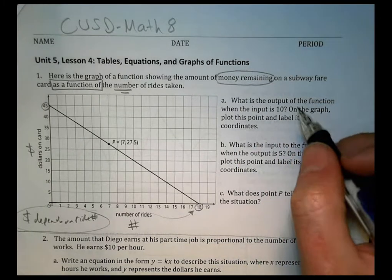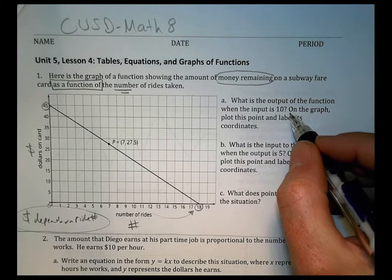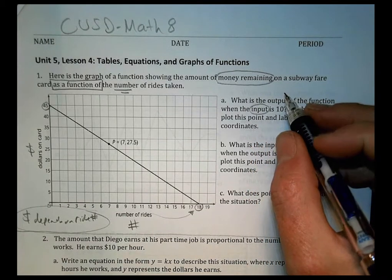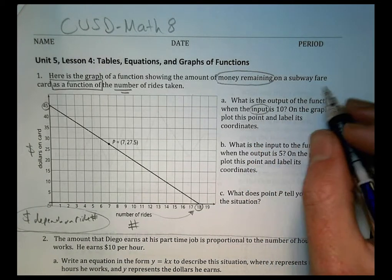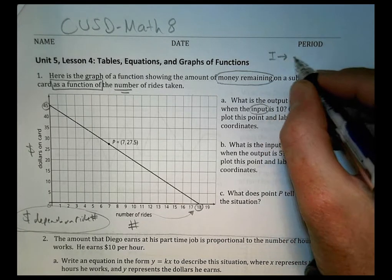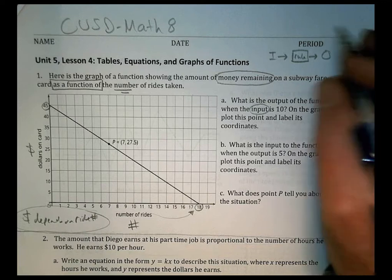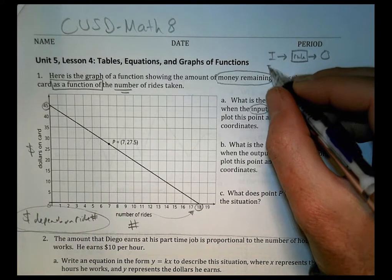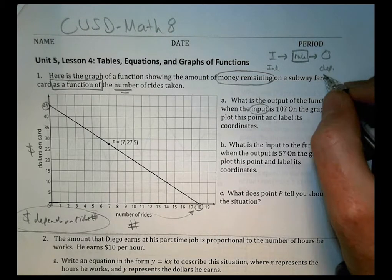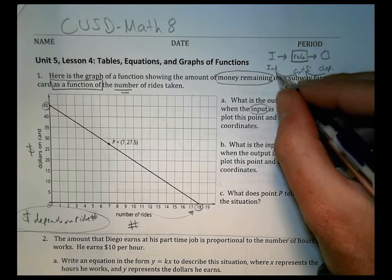So the money remaining is a function of the number of rides. Or we could say the money that you have depends on how many rides you take. So money depends on ride number. The money you have depends on the ride numbers. So let's look at the questions here. What is the output of the function when the input is 10? So the input, if you remember, is always our independent variable. That's what we're putting into the system.